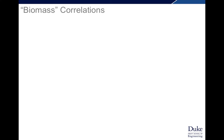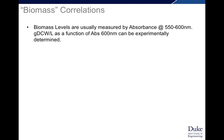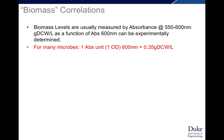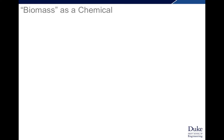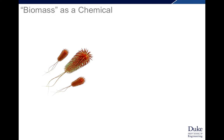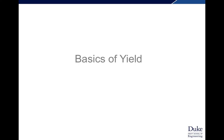Biomass correlations are really important for the lab portions of the course. Biomass levels are routinely measured using absorbance with a spectrophotometer — measuring absorbance at 600 nanometers. It's important to know there's generally a correlation between that reading and the gram cell dry weight in a culture. For many microbes, one absorbance unit at 600 nm equals 0.35 gram dry cell weight per liter. So if you had one liter of OD1 culture, you would have 0.35 grams of cells. Biomass is also a chemical: E. coli grown in glucose media has the formula C₃.₈₅H₆.₆₉O₁.₇₈N₁, and we use that chemical formula when we calculate yields.